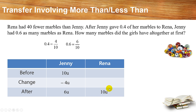Now work backwards for Rina. Remember, Jennie gave 4 units to Rina, so if Jennie's change was minus, Rina's change is plus. To work backwards, you take 10 minus 4, which gives you 6 units for Rina before.